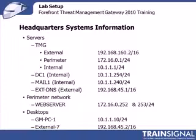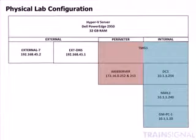We have a desktop internally called GMPC1 and an external desktop called External-7. They're both running Windows 7. The external desktop exists for purely demonstration purposes — it's my remote or outside user. In order to show you how certain things work, such as web publishing from the internet, I needed an internet-based system, so External-7 sits out in my external network.